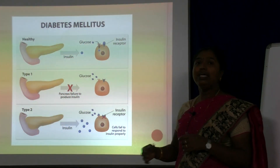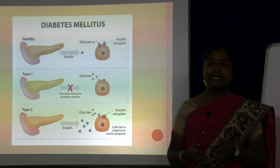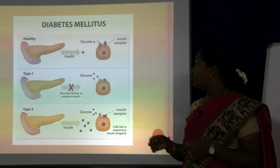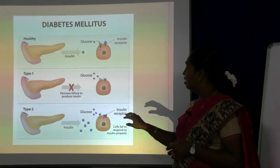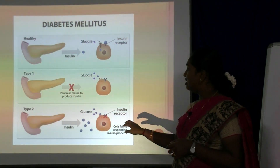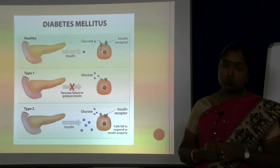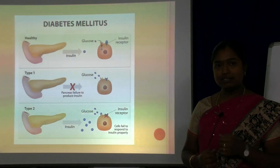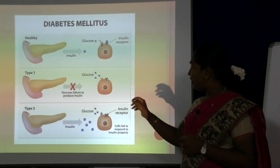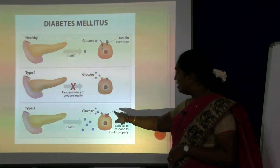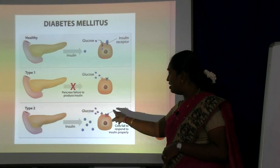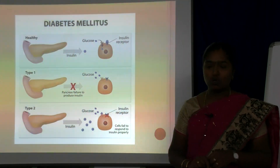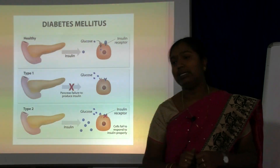In Type 2, insulin may be secreted only partially or may be impaired at times. Only half of the insulin is secreted, so the insulin receptor receives only half of the insulin, and the cell fails to respond to insulin properly.